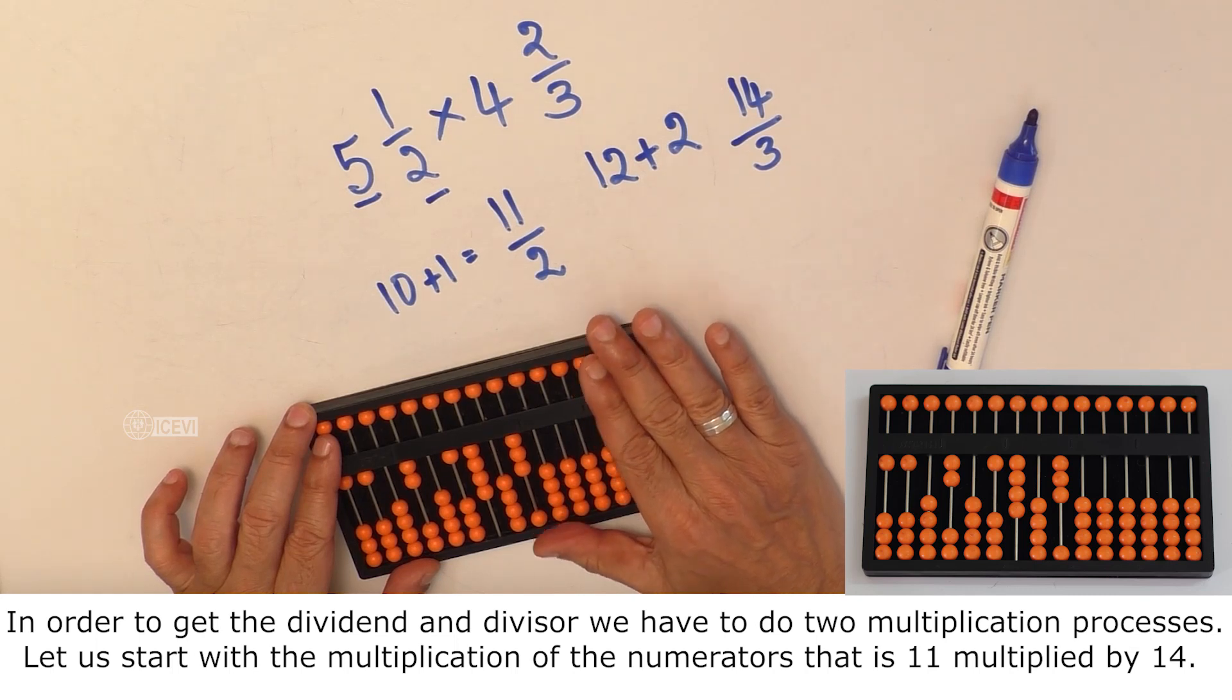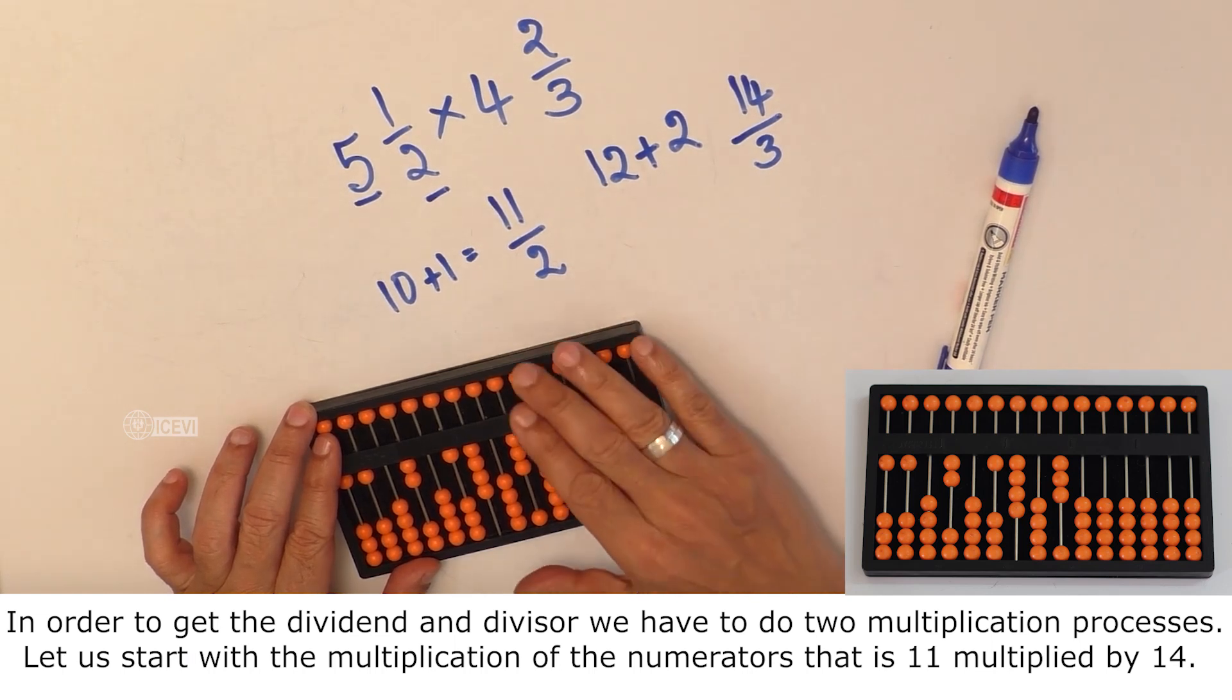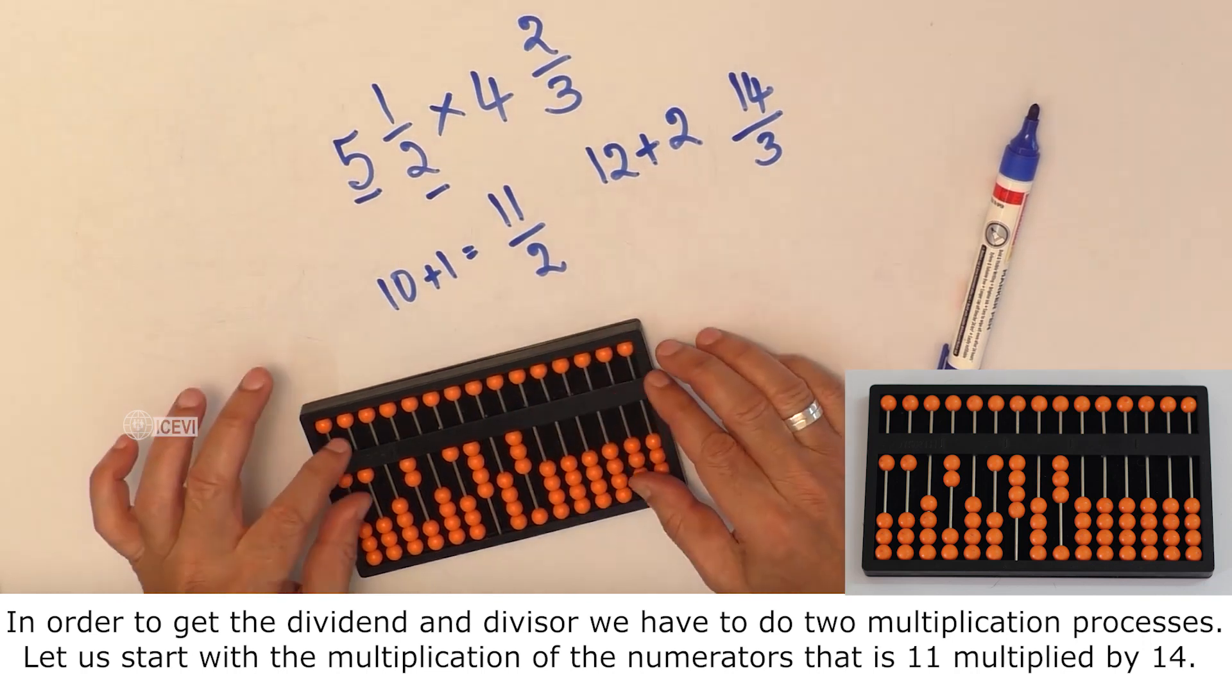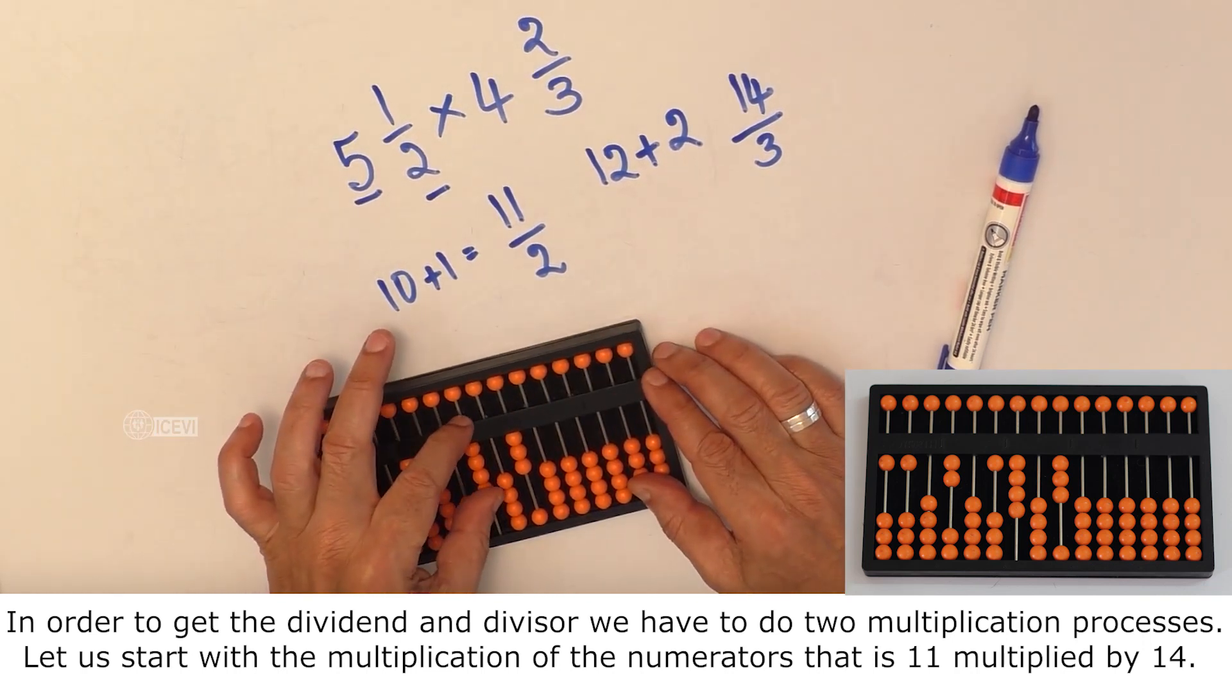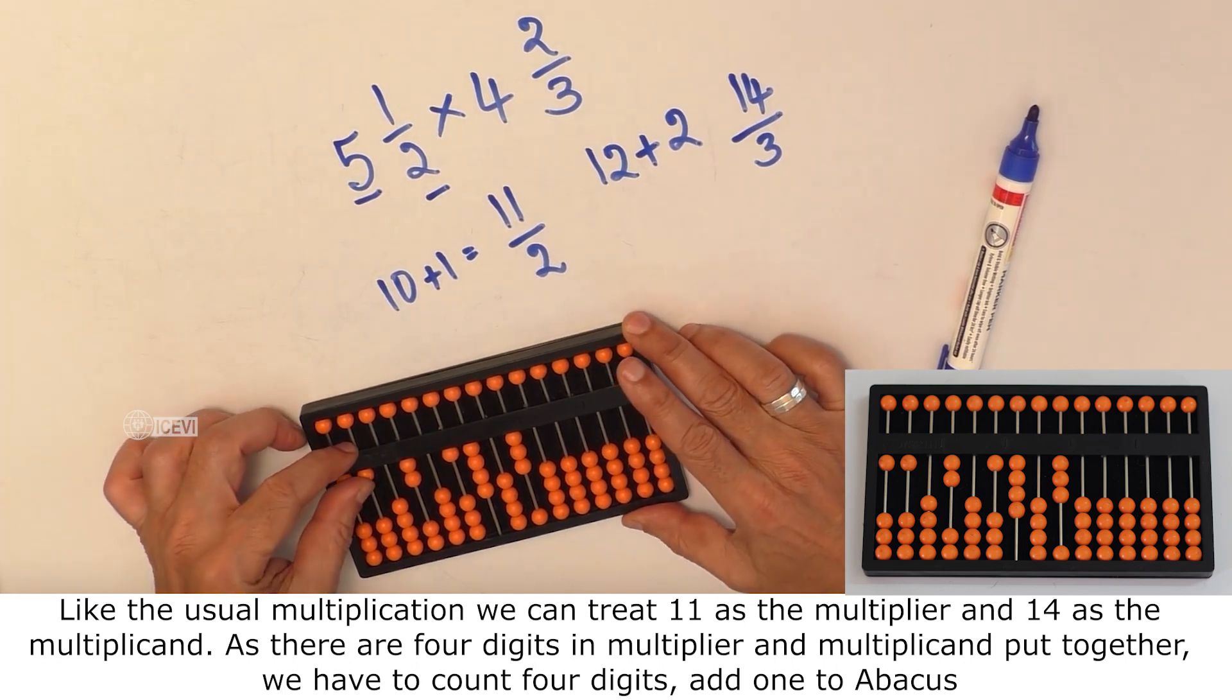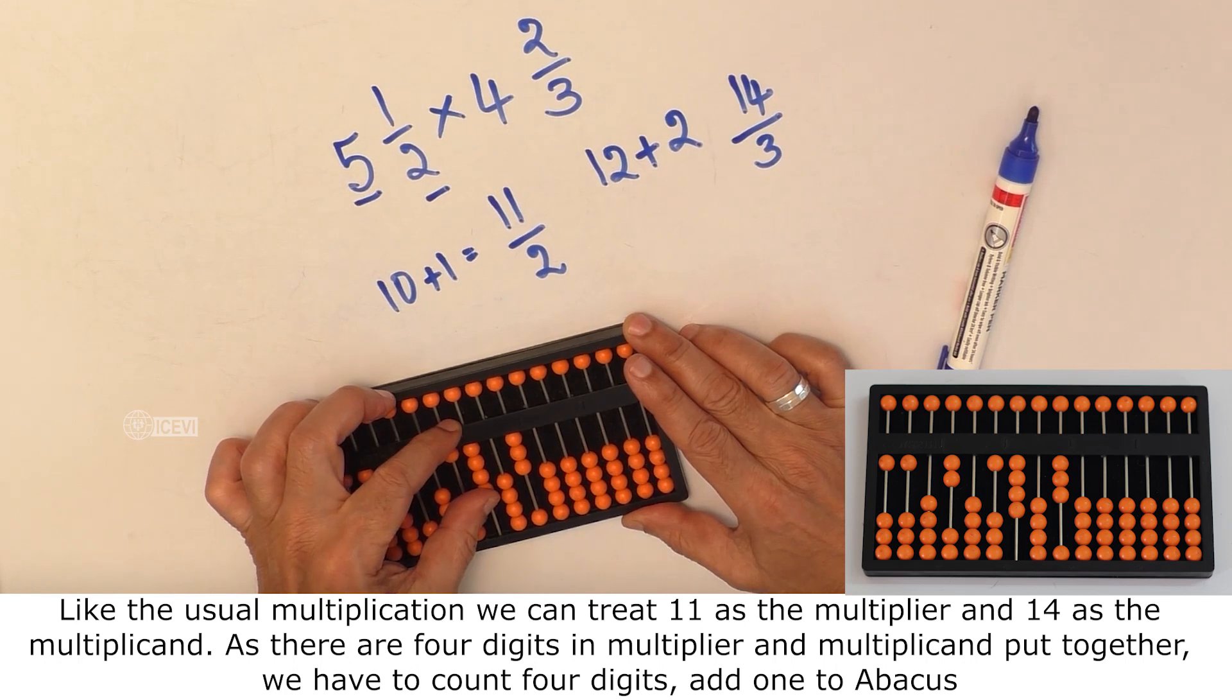In order to get the dividend and divisor we have to do 2 multiplication processes. Let us start with the multiplication of the numerators 11 and 14. Like the usual multiplication we can treat 11 as the multiplier and 14 as the multiplicand.